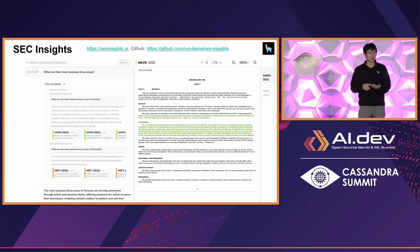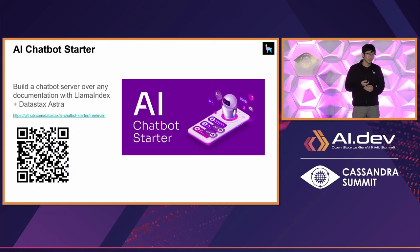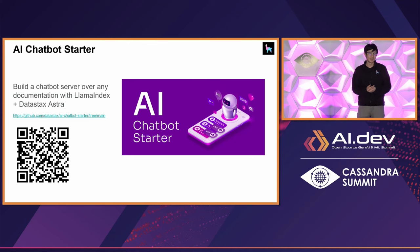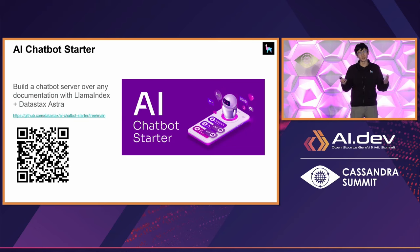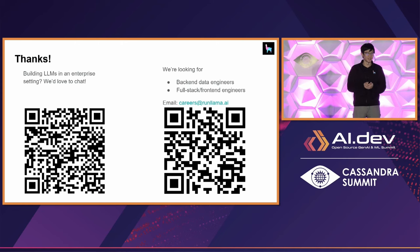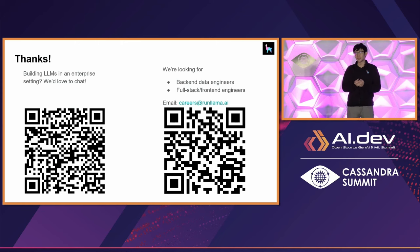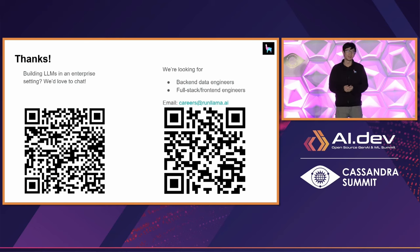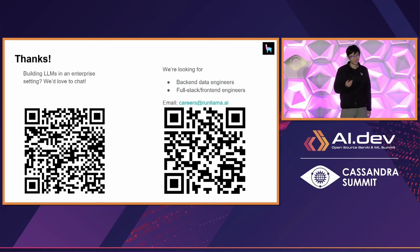It contains a PDF viewer, intermediate sources and citations, and follows the architecture I described. Another resource: you can build a chat server over any documentation using LlamaIndex plus DataStax Astra — there's a GitHub link and QR code in the slides to generate a full-stack API server that does RAG. Finally, if you're building LLMs in an enterprise setting, we'd love to chat. We're also looking for back-end data engineers as well as full-stack front-end developers. Thank you!